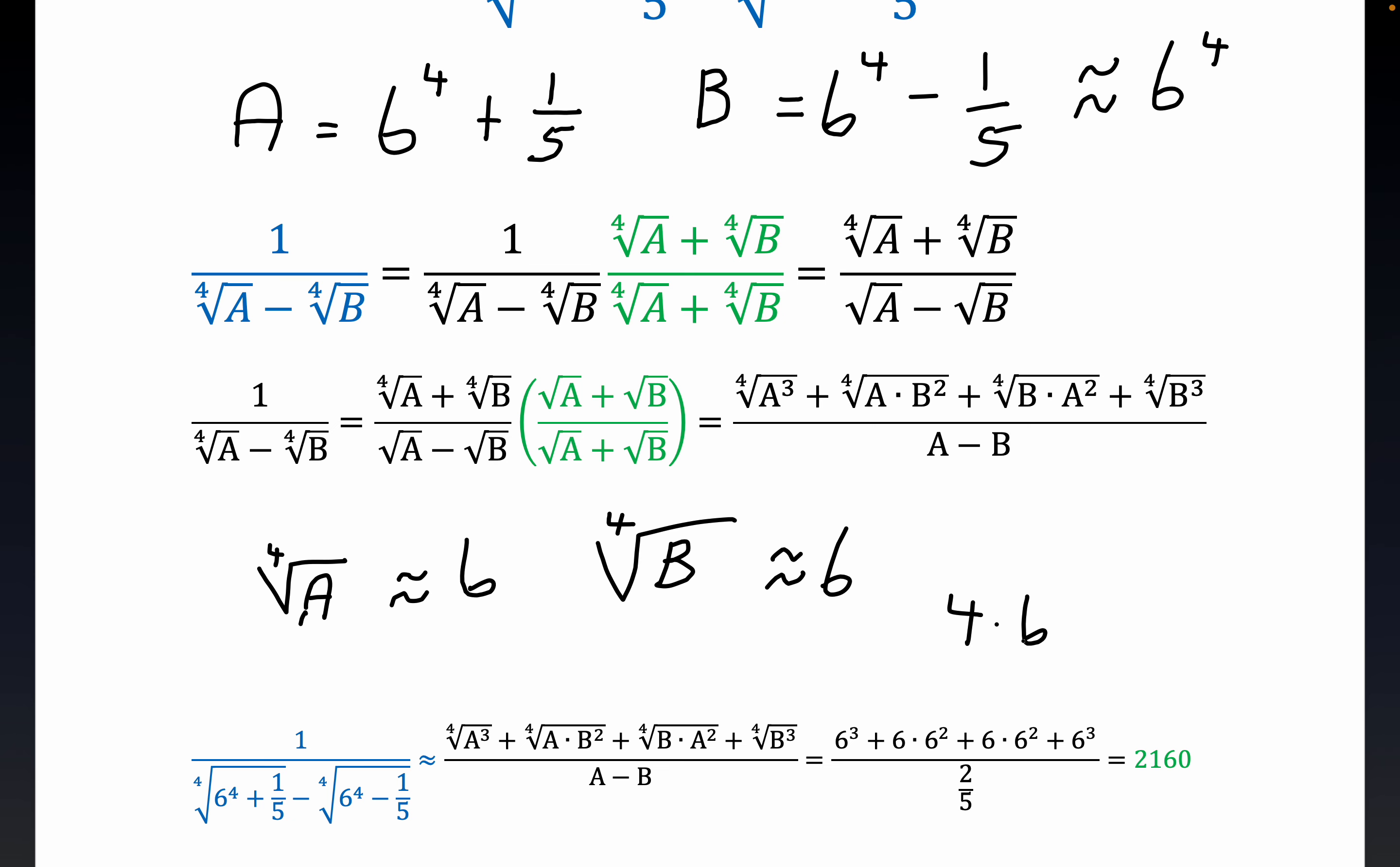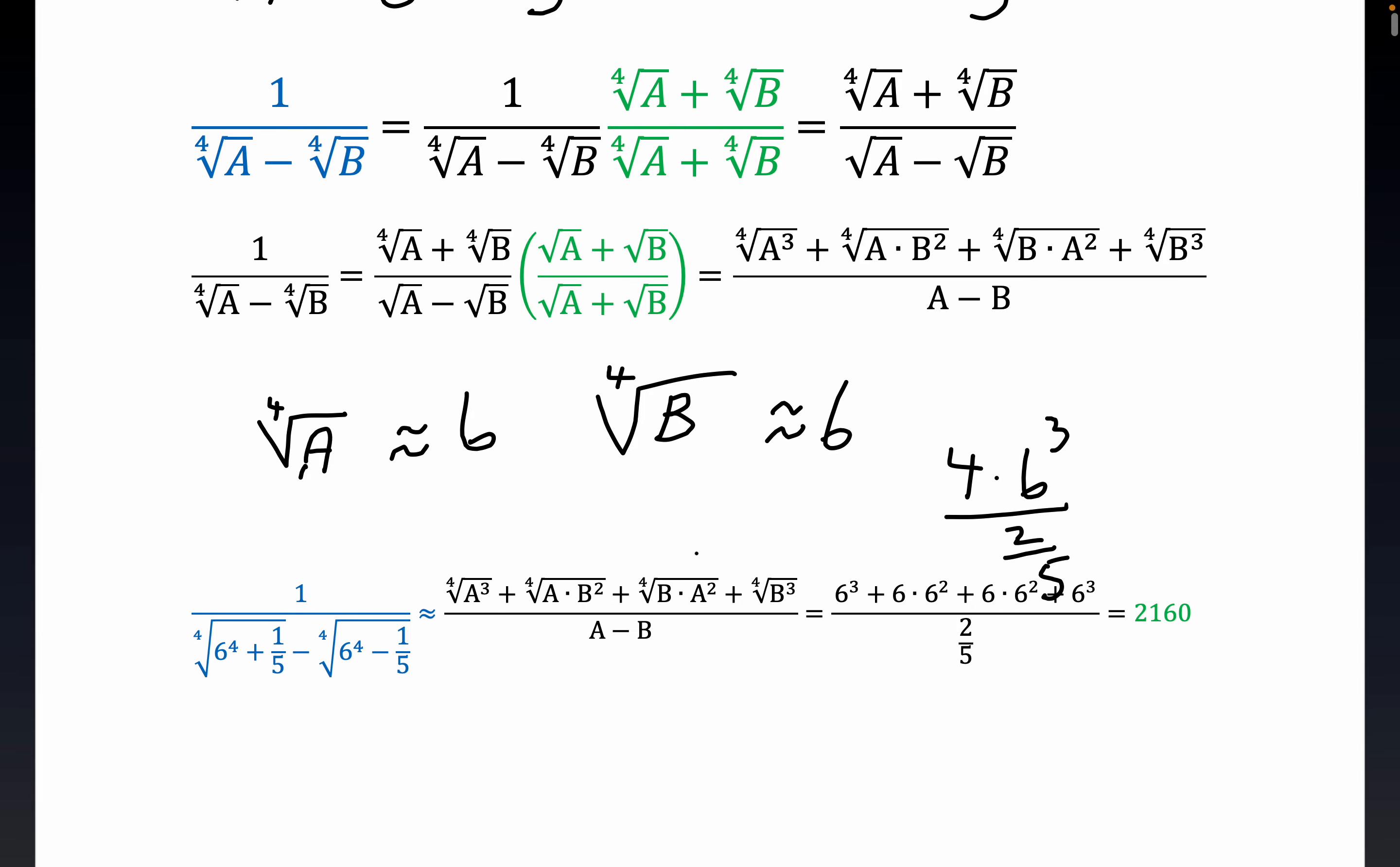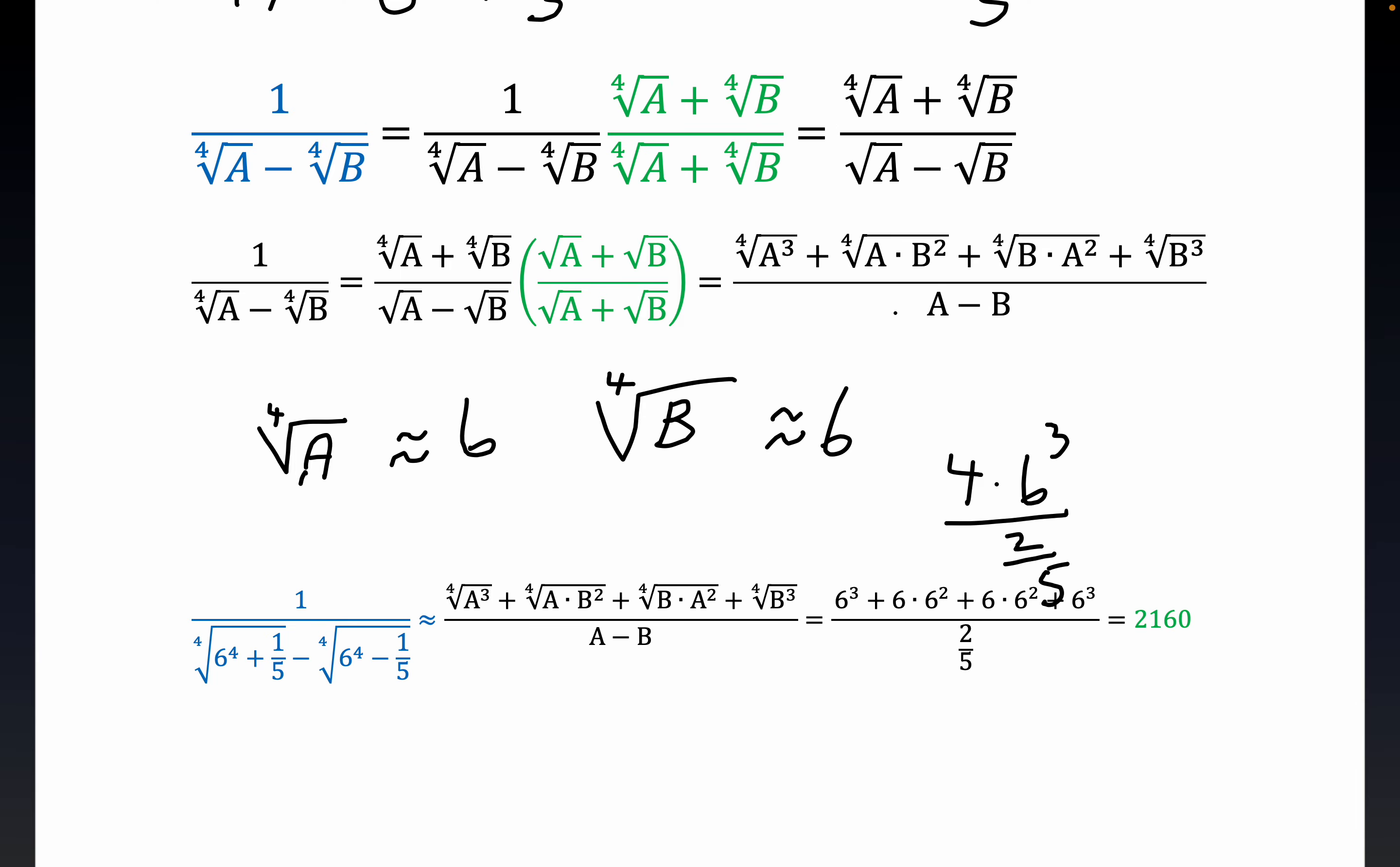Now notice this top part is just really four times six cubed. So really you have four times six cubed divided by two-fifths. You know, it's clear where the two-fifths comes from. The one-fifth minus one-fifth is two-fifths. So that's what's happening there.